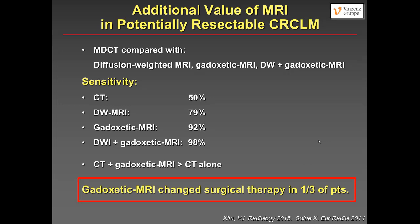MRI clearly has additional value for potentially resectable colorectal liver metastases. In one study, CT sensitivity was 50%, diffusion roughly 80%, gadoxetic MRI more than 90%, and the combination of diffusion with gadoxetic acid was the best. Moreover, this strategy changed the surgical plan in about one-third of patients — either requiring extended resection because more metastases were found, or rendering the patient unresectable due to the number of metastases identified.